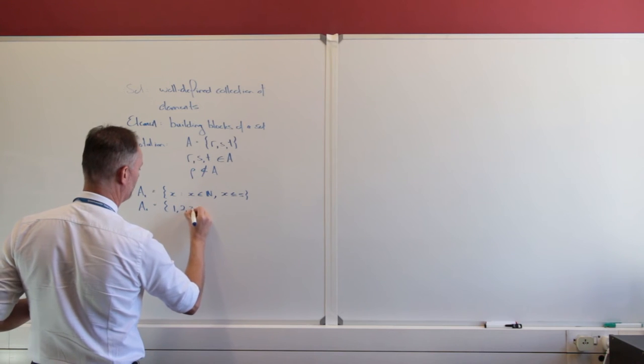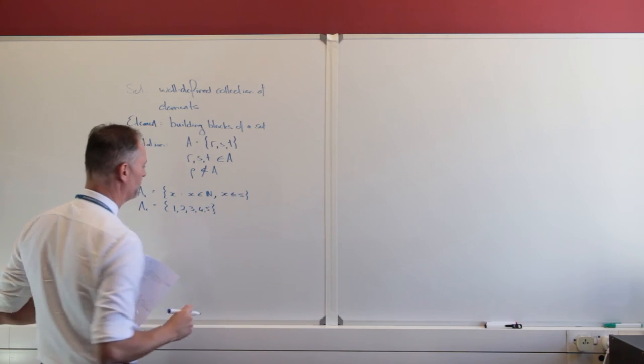So that is a well-defined set. And that is good set notation. Because A1 now is really going to be the elements 1, 2, 3, 4, and 5. No problem there.